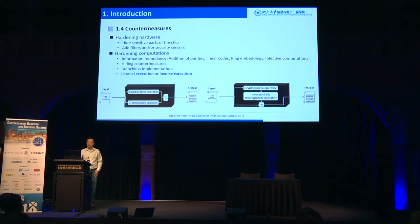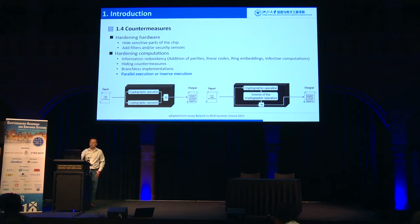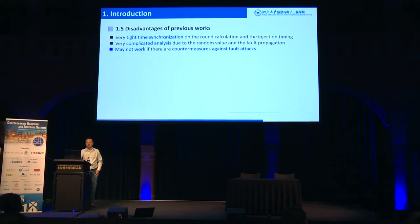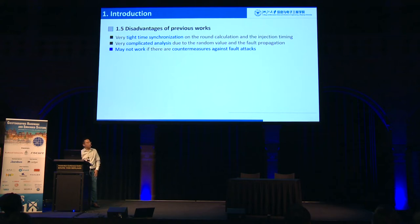When we talk about fault attacks, we need to address countermeasures. Typically there are two categories. One is to harden the hardware — for example, deploying ring oscillators or other sensors. The other is to harden the computations, for example using redundant encryption or invasive decoration. Previous work has disadvantages: they require very tight time synchronization between encryption and injection, the analysis is complicated due to random values and fault propagation, and most may not work if there are countermeasures against fault attacks.